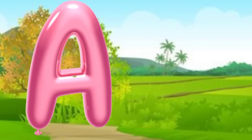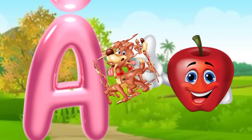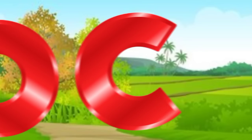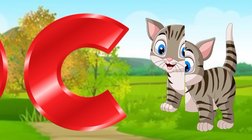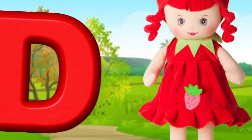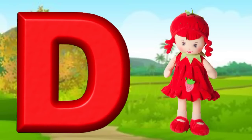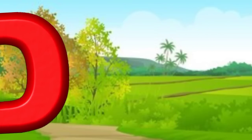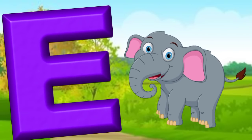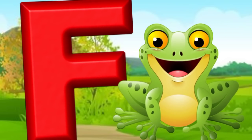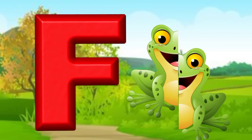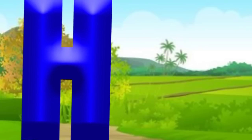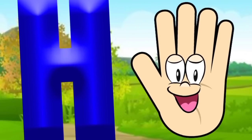A is for apple, a-a-apple. B is for ball, b-b-ball. C is for cat, c-c-cat. D is for doll, d-d-doll. E is for elephant, e-e-elephant. F is for frog, f-f-frog. G is for goat, g-g-goat. H is for hand, h-h-hand.